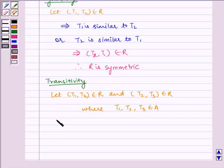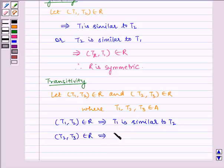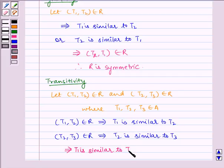Now (T1, T2) ∈ R implies T1 is similar to T2. Also, (T2, T3) ∈ R implies T2 is similar to T3, which implies T1 is similar to T3.